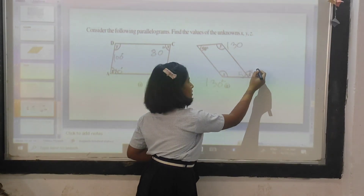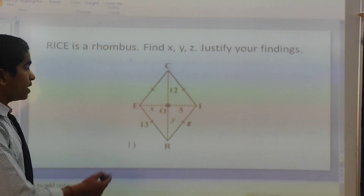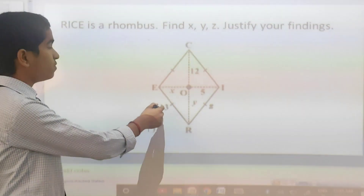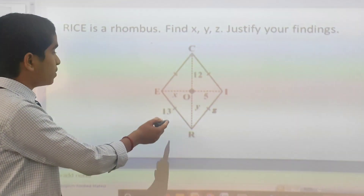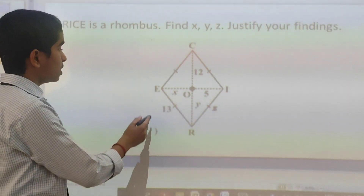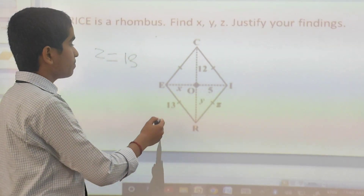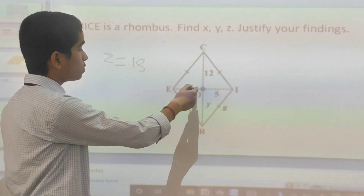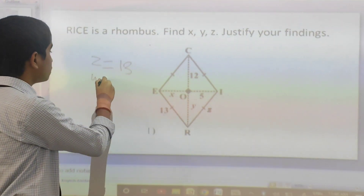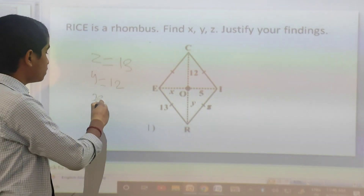In this example, a rhombus is given to us. We have to find the values of x, y, and z. We know the properties of a rhombus — all four sides are equal. Therefore, if ER is equal to 13, then RI will be 13. Therefore, z will be 13. The second property of a rhombus is that diagonals bisect each other. Therefore, CO equals OR. If CO is equal to 12, then OR will also be 12. Therefore, y is equal to 12. Similarly, if EO equals 5, then x will also be 5.